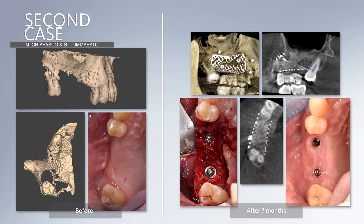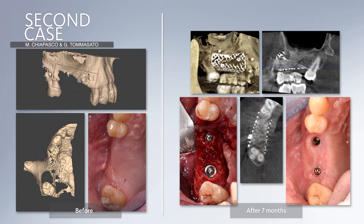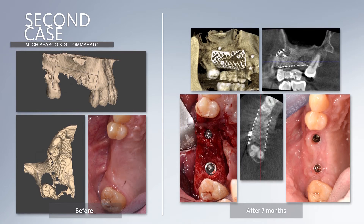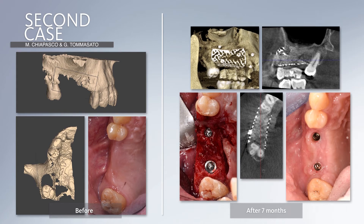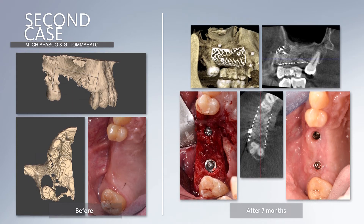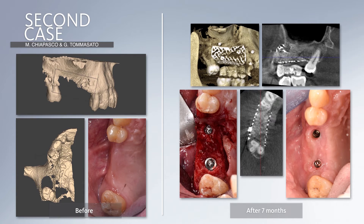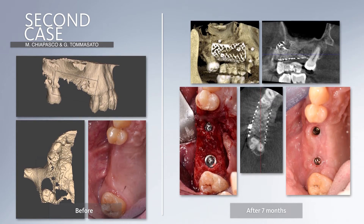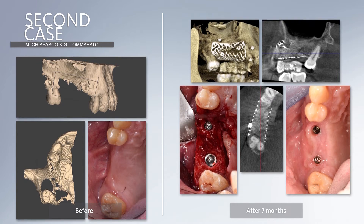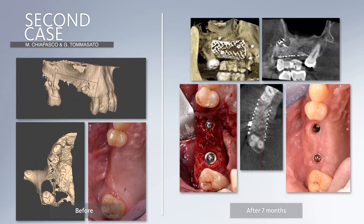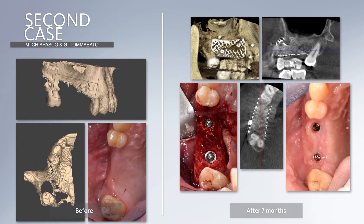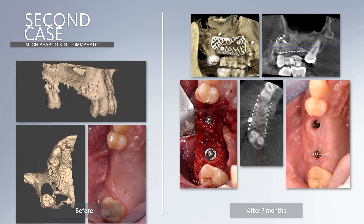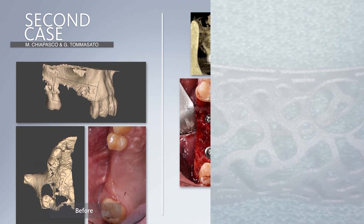A second case is here presented. It is a defect in the upper maxilla where the same procedure has been performed. There are no images with all details of the surgery, but you can see the initial situation, corrections thanks to the titanium mesh, and then at the time of reopening it is possible to observe a beautiful integration of the new bone with nice thickness and height, and the possibility of placing two implants in a prosthetically driven way.